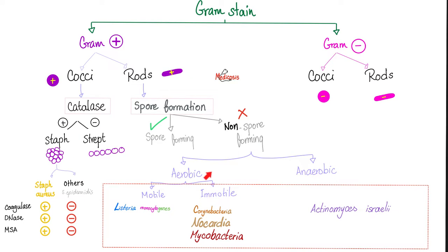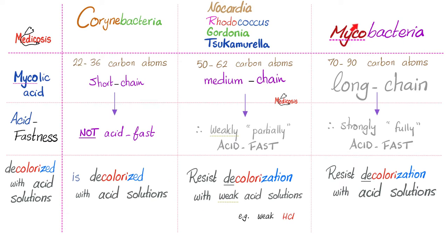Mycobacteria are immotile, aerobic, non-spore-forming, gram-positive rods. They do not stain well with gram stain, which is why you will need an acid-fast stain instead. Mycobacteria have a long-chain mycolic acid of 70 to 90 carbons, and because they have mycolic acid, they resist decolorization with acid solutions. Therefore, they are acid-fast.